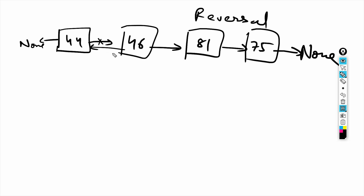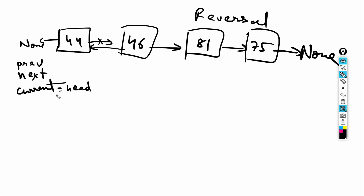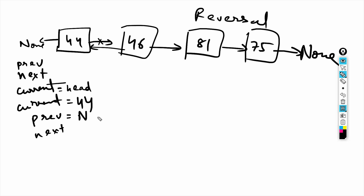To do that, I need three variables: next, current, and previous. Current will have the value of head, which right now is 44. Previous and next will both point to None initially, since we don't have a previous or next yet. These two variables will help drive all the reversal logic.